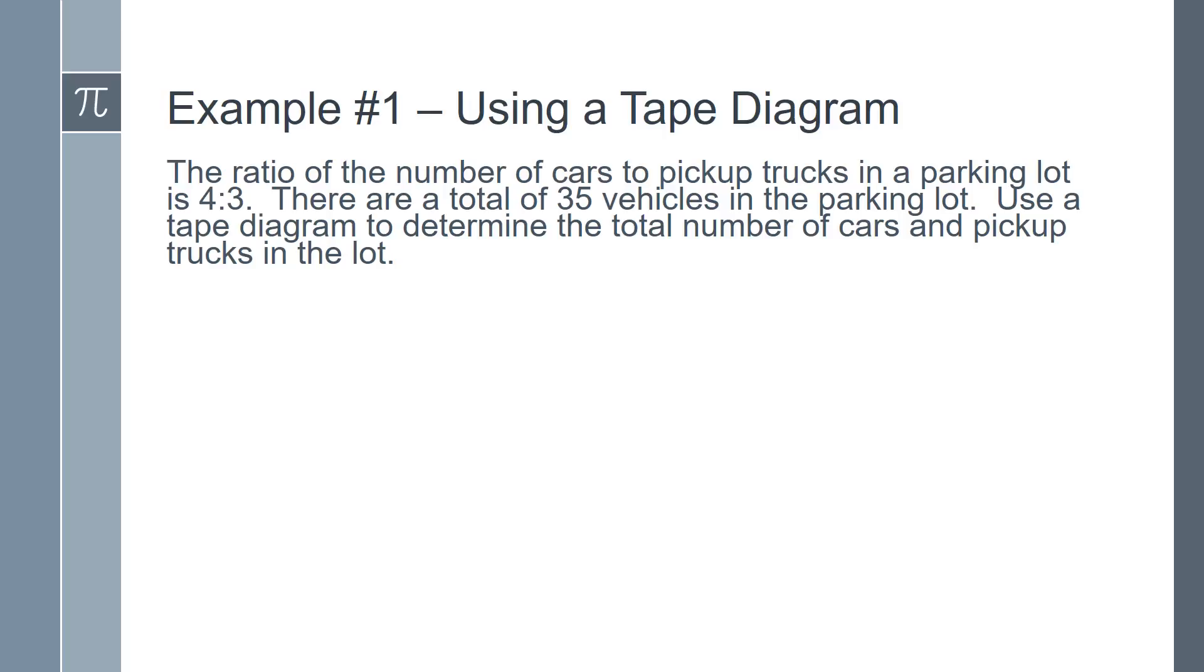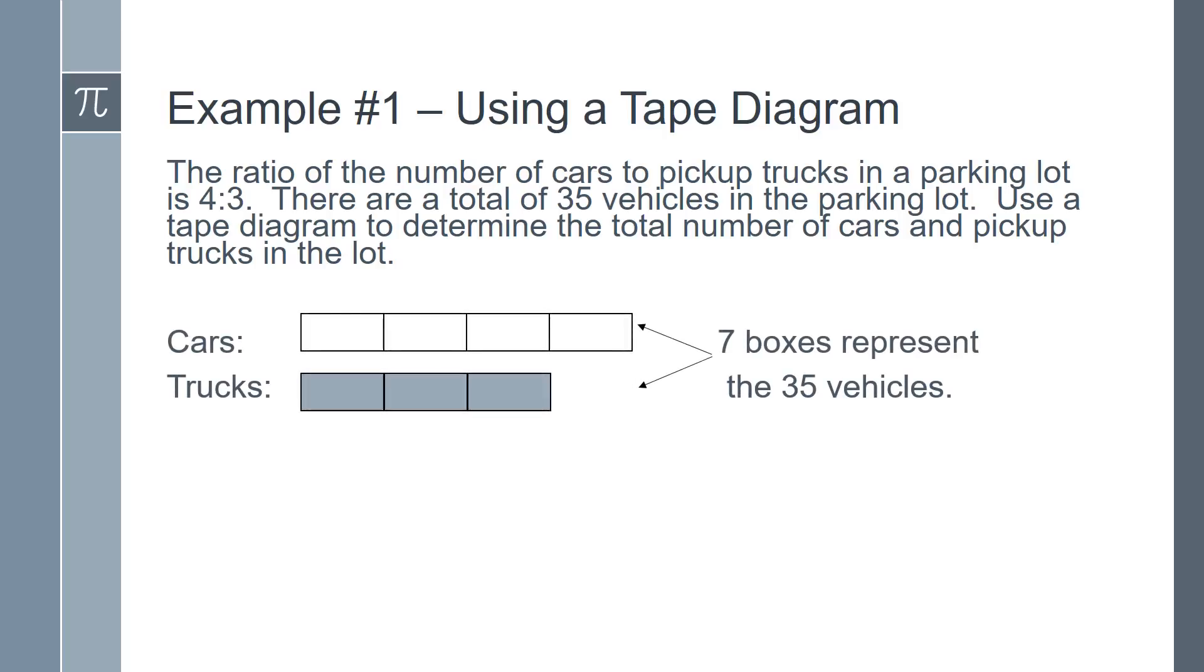There are 4 cars to every 3 trucks, so our tape diagram should have 4 boxes for cars and 3 boxes for trucks. This makes for a total of 7 boxes, which represent the 35 vehicles.